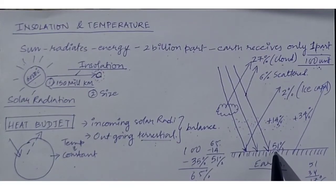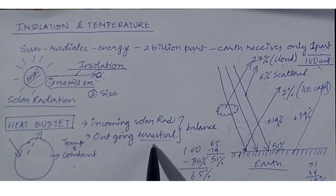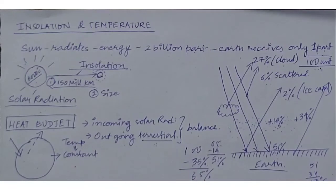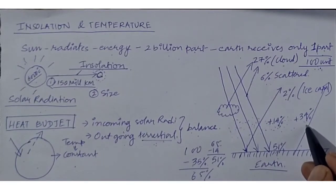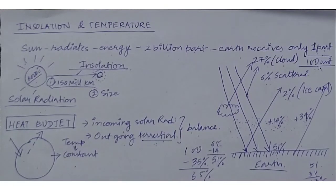That 51 percent is not retained by the Earth's surface — it is radiated back to space during the night, which we call terrestrial radiation. If the Earth absorbed 51 percent every day, it would become a very hot planet. To maintain a constant temperature, the heat received is radiated back. Out of that 51 percent, 14 percent is absorbed during the daytime and 34 percent during the nighttime, with the remaining 17 percent finally escaping from the Earth's atmosphere.